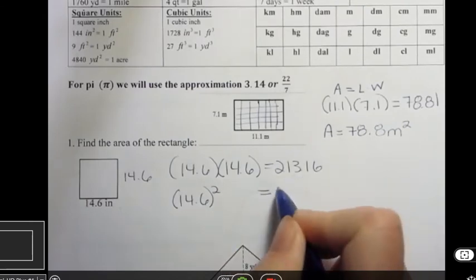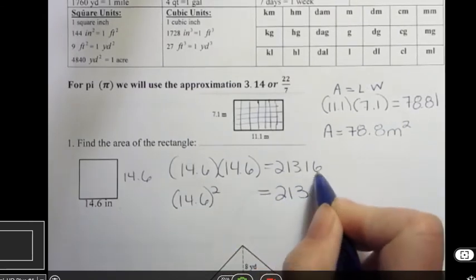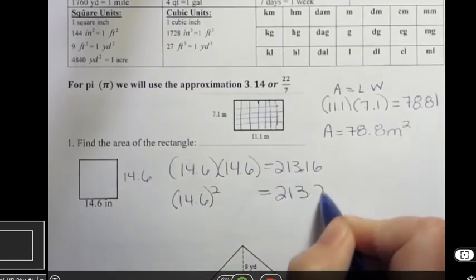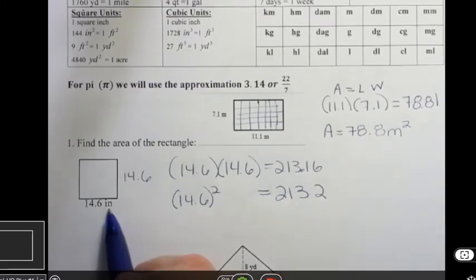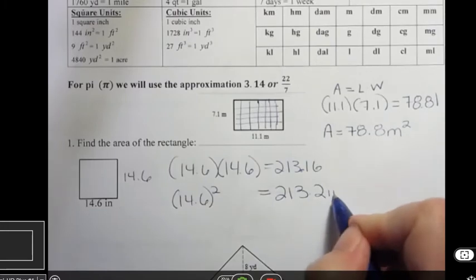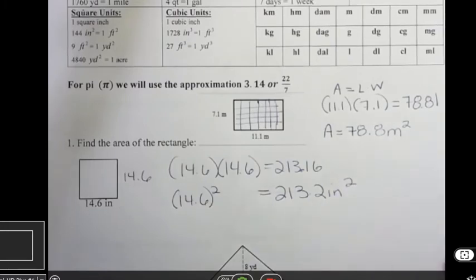And then I'm going to round that to the tenths. And because I have a six here, I'm going to round that to two. And what are my units going to be? Well, the units are going to be inches to the second power, always to the second power when we're doing that.